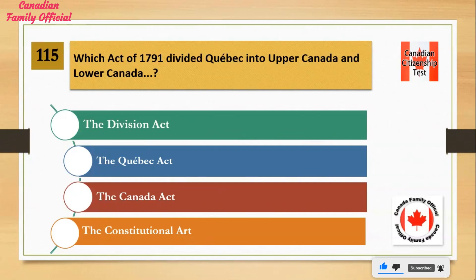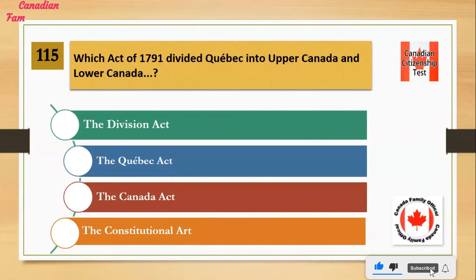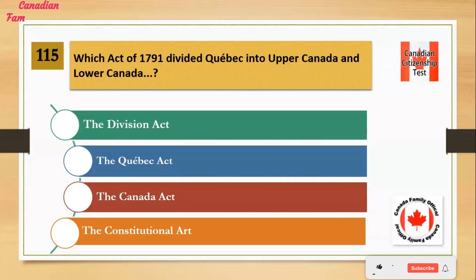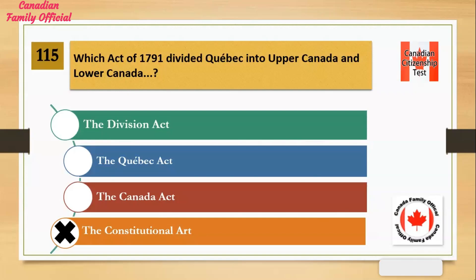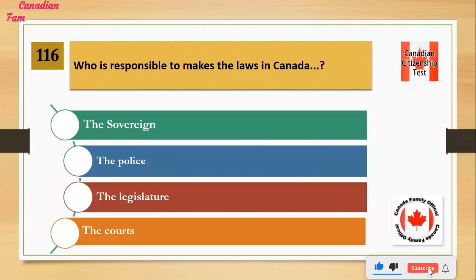Which Act of 1791 divided Quebec into Upper Canada and Lower Canada? Number 1: the Division Act. Number 2: the Quebec Act. Number 3: the Canada Act. Number 4: the Constitutional Act. And the answer is the Constitutional Act.